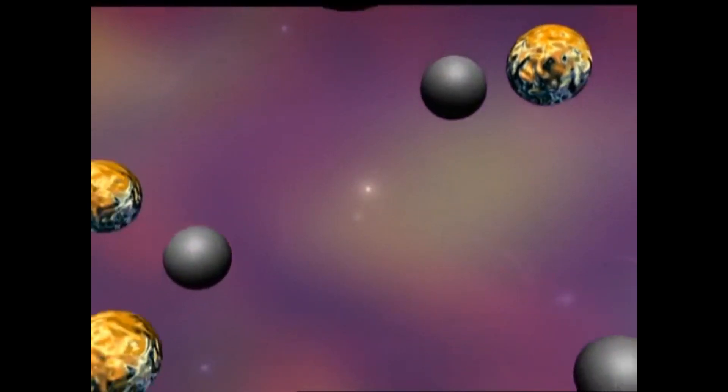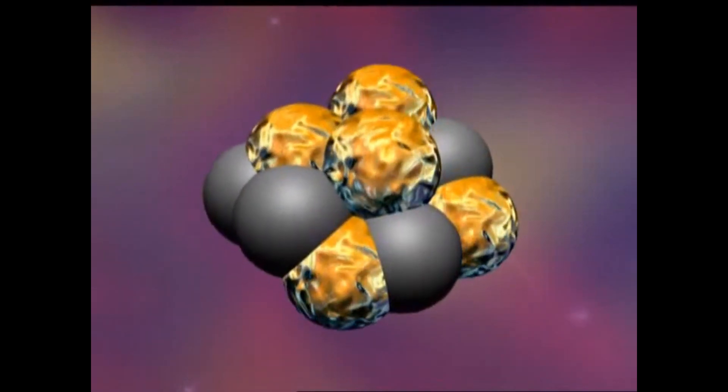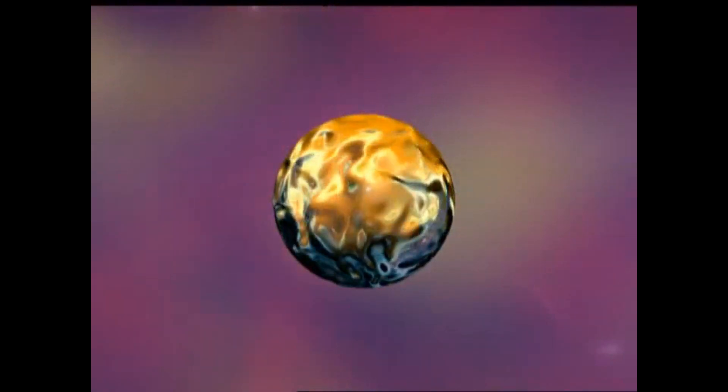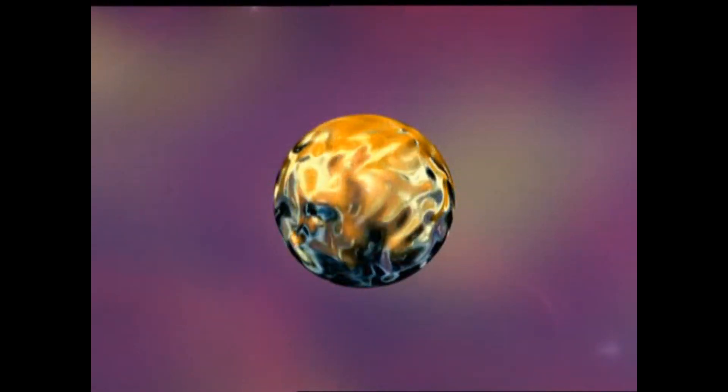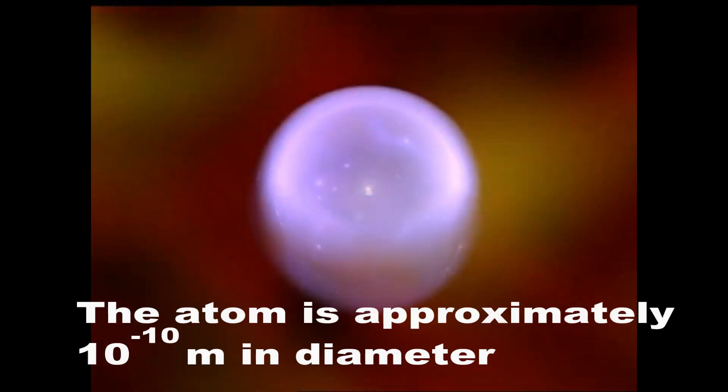The nucleus of most atoms is made up of protons and neutrons. The only exception is the hydrogen nucleus. It contains just one proton. Each nucleus is tiny compared to the rest of the atom, which is almost all empty space. The only things there are electrons, orbiting the nucleus at very high speed.